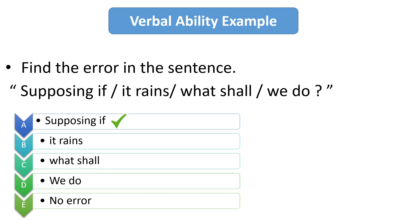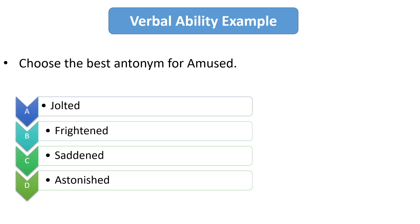Now our next question is choose the best antonym for amused. So its right answer is C, that is saddened.